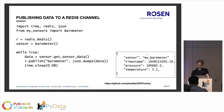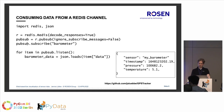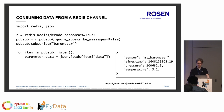Now let's look at how to consume that data. Again, we need the Python Redis client and JSON. We create a Redis connection, create a PubSub object, and subscribe to the channel 'barometer'. We run a for loop over PubSub.listen, and on each iteration we decode the JSON string to obtain our barometer data and decide how to do further processing.